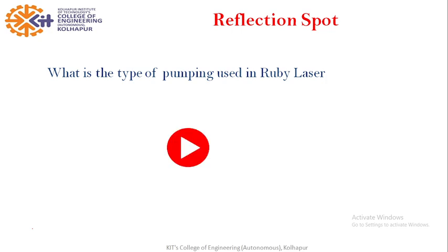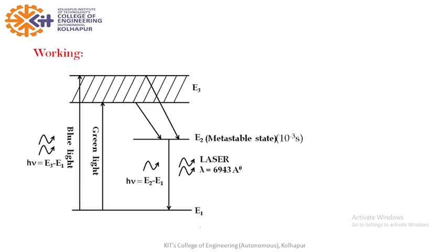What is the type of pumping used in laser? You may pause the video and answer this question. We have discussed construction and we have seen that xenon discharge tube is surrounded by the ruby rod. We know xenon discharge tube is source of light and thus we can say that we use optical pumping in ruby laser. We use optical pumping because we use light energy for excitation.